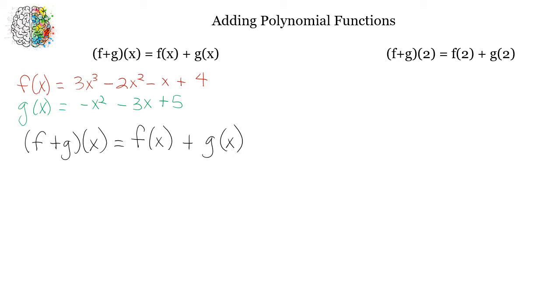We're going to take this first function. So our f of x, that's 3x cubed minus 2x squared minus x plus 4. We're going to take that, and we're going to add it to the g of x. Now you'll notice our g of x doesn't have an x cubed, so that's going to just be a zero coefficient, so that we're lining everything up.